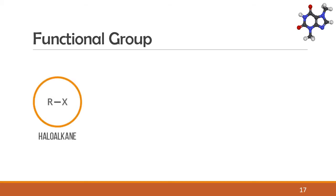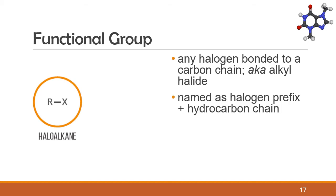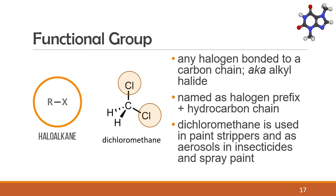Next, we have haloalkane. A haloalkane is any halogen bonded to a carbon chain. It is also known as an alkyl halide. Haloalkanes are named using the halogen prefix plus the hydrocarbon chain to which it is attached. Dichloromethane is used in paint strippers and as aerosols in insecticides and spray paint.